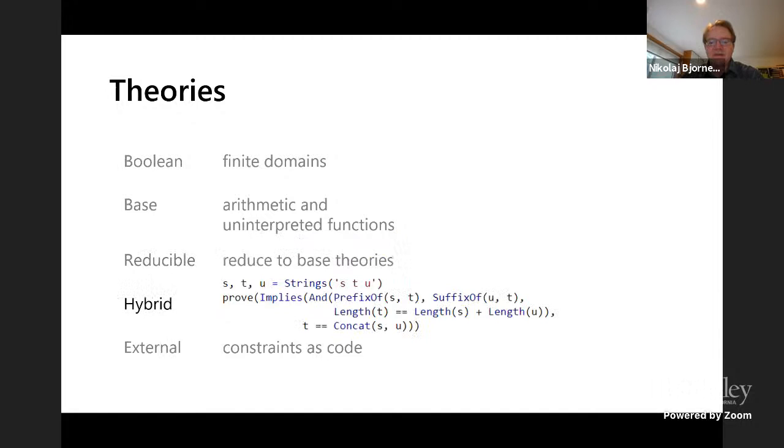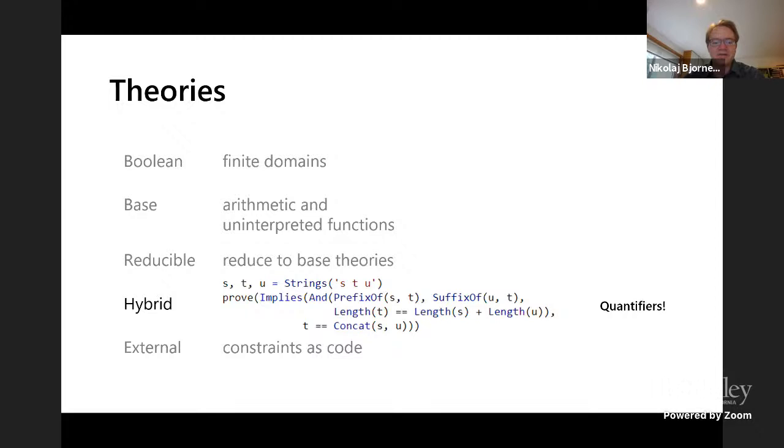There are hybrid theories that combine non-disjoint theories. An important example is the theory of strings and sequences. In this example, we have three strings s, t and u. It says that if s is a prefix of t and u is a suffix of t, but the lengths of s and u equals the length of t, then indeed t has to be the concatenation of s with u. Finally, a very important example of hybrid theories is quantifiers.